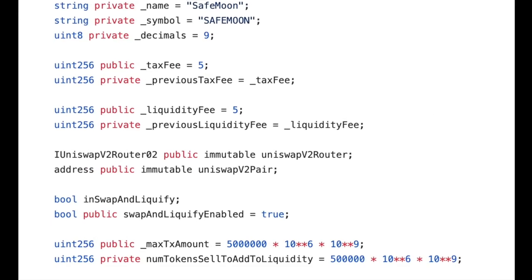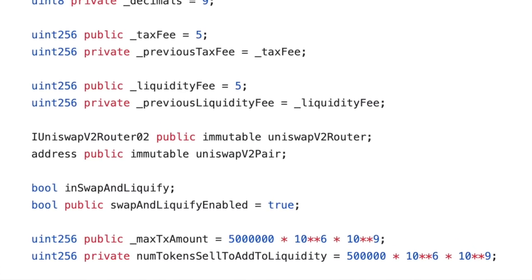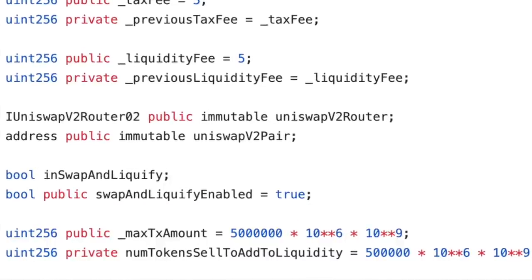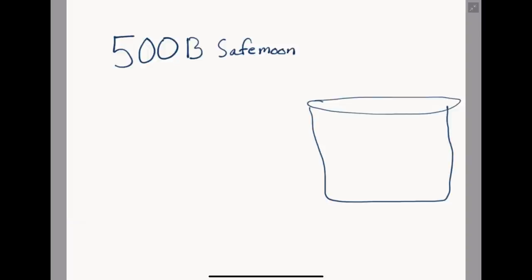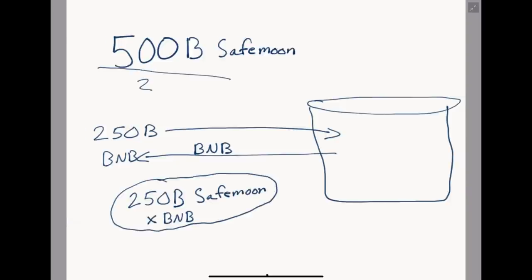How often does this happen? If we scroll up, we can see that num_tokens_sell_to_add_to_liquidity is defined as 500 billion — the 10 to the 9th at the end is only to cancel out the nine decimal places SafeMoon uses. Once there are 500 billion SafeMoon set aside for liquidity, the SafeMoon smart contract automatically splits this balance in half. Half of it — 250 billion SafeMoon — is sold for BNB. So 250 billion SafeMoon is added to the liquidity pool and the equivalent amount of BNB is taken out.